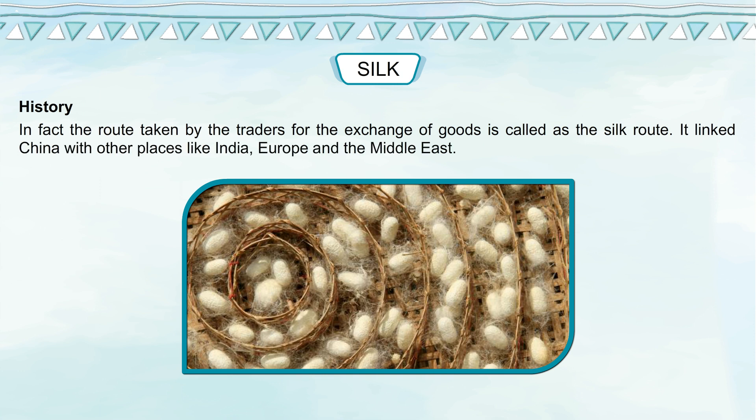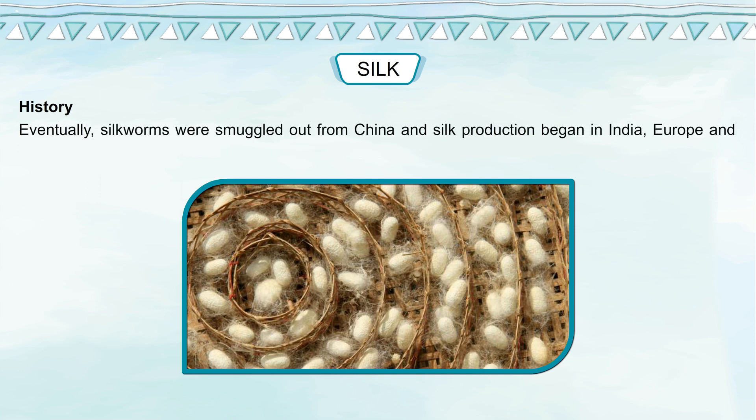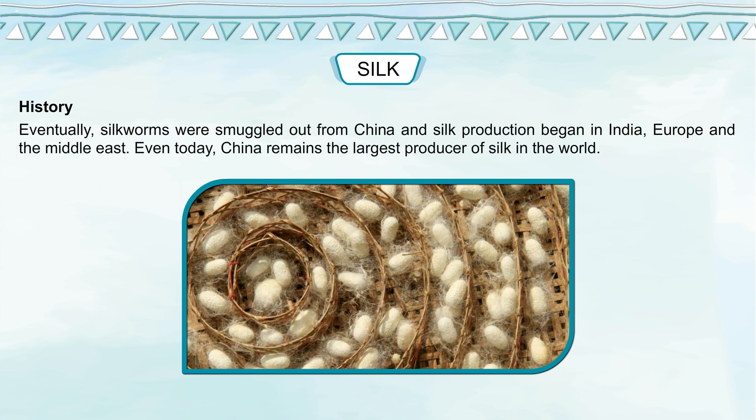The Silk Route linked China with other places like India, Europe and the Middle East. Eventually, silkworms were smuggled out of China and silk production began in India, Europe and the Middle East. Even today, China remains the largest producer of silk in the world.